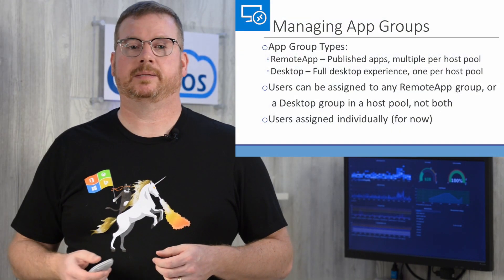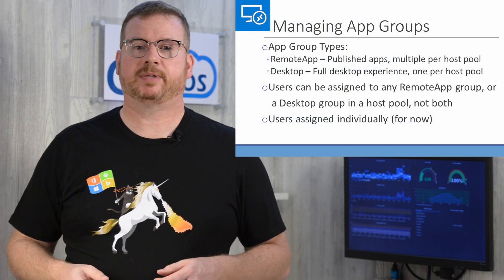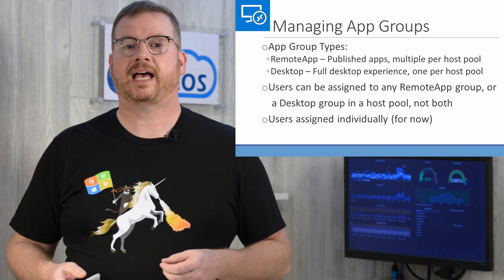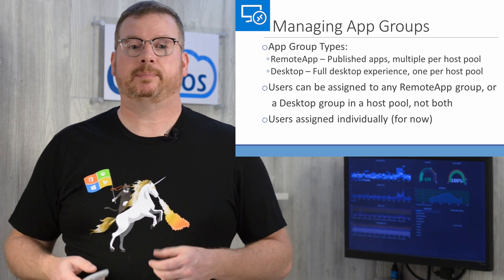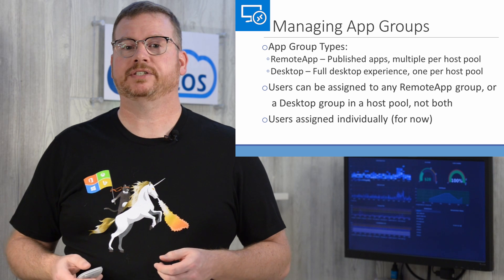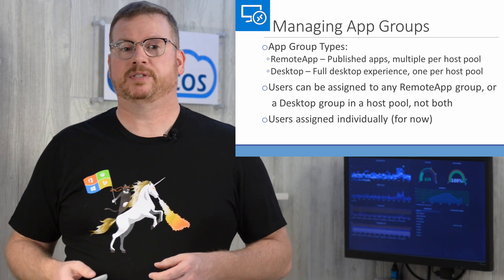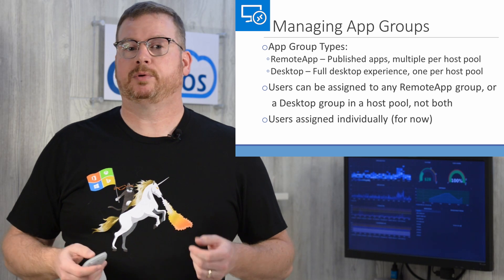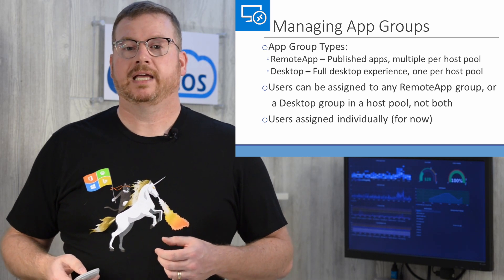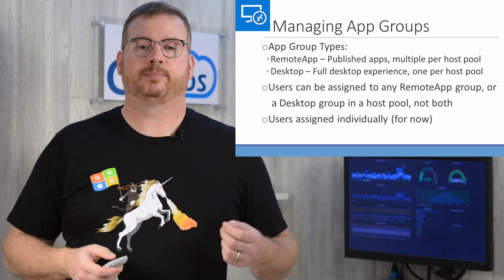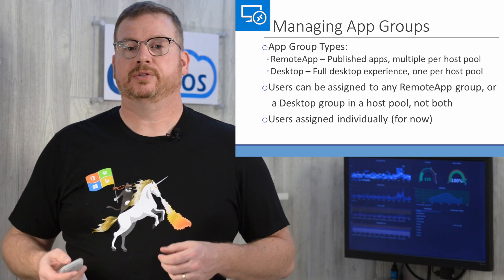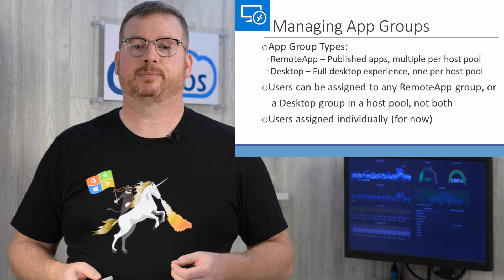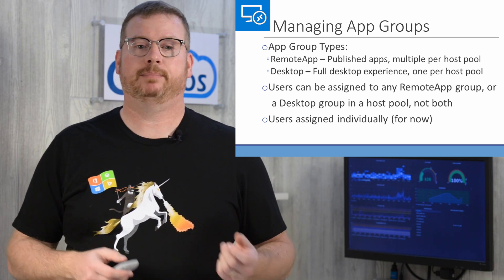Let's start by reviewing some of the basics of application groups. There can be two types of application groups: desktop and remote app. Remote app is for publishing remote applications. A desktop app group is for a full desktop experience. There can be multiple remote app groups in a host pool, and only one desktop app group in a host pool. Users can be assigned to remote app groups or a remote desktop app group in a host pool, but not both.